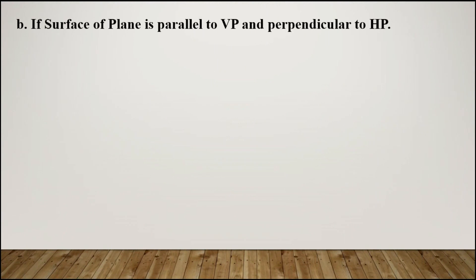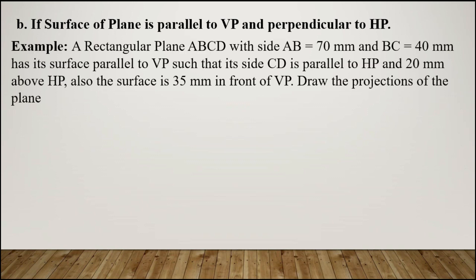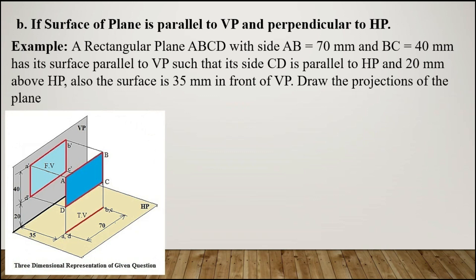Sub-case B: if the surface of the plane is parallel to VP and perpendicular to HP. Example: a rectangular plane ABCD with side AB = 70 mm and BC = 40 mm has its surface parallel to VP such that its side CD is parallel to HP and 20 mm above HP. Also, the surface is 35 mm in front of VP. Draw the projections of the plane. Here the true shape rectangle is visible in the front view.